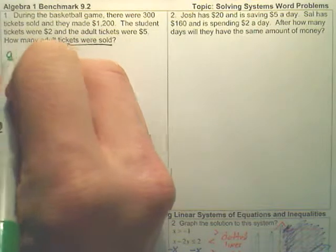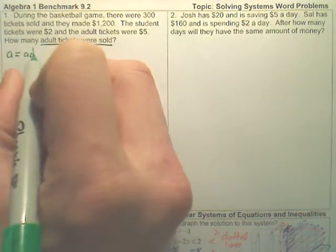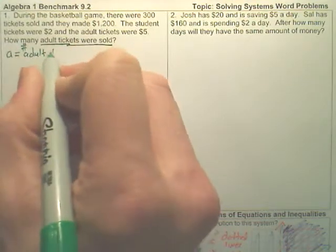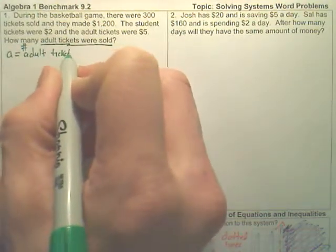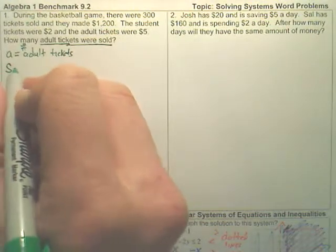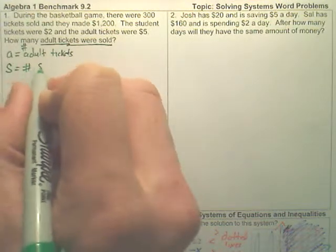I'm going to let A equal adult tickets, or the number of adult tickets. And I'm going to let S equal the number of student tickets.